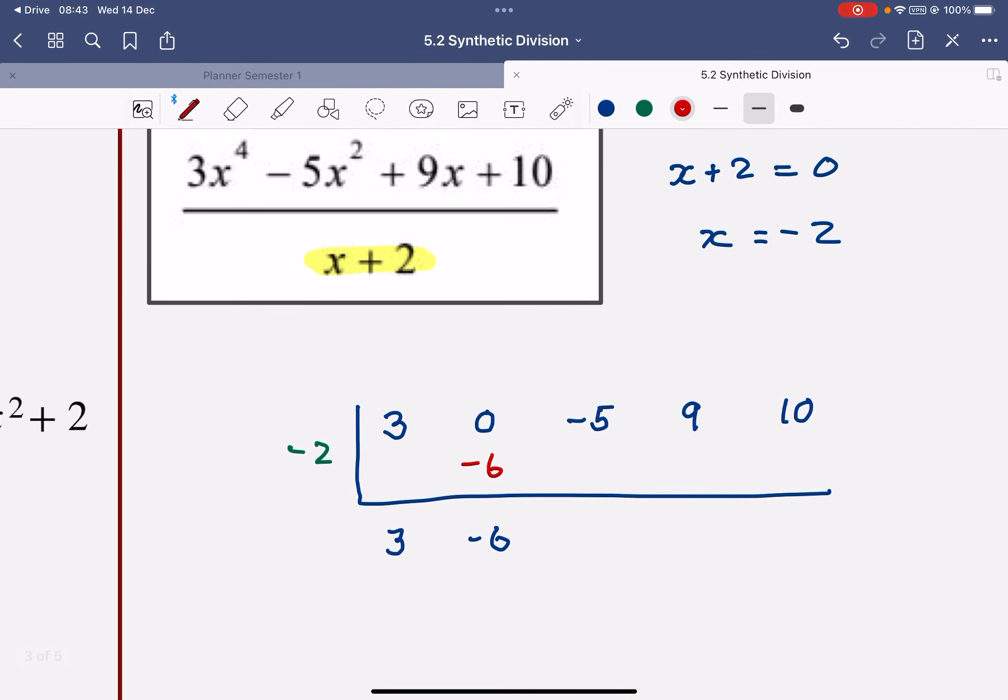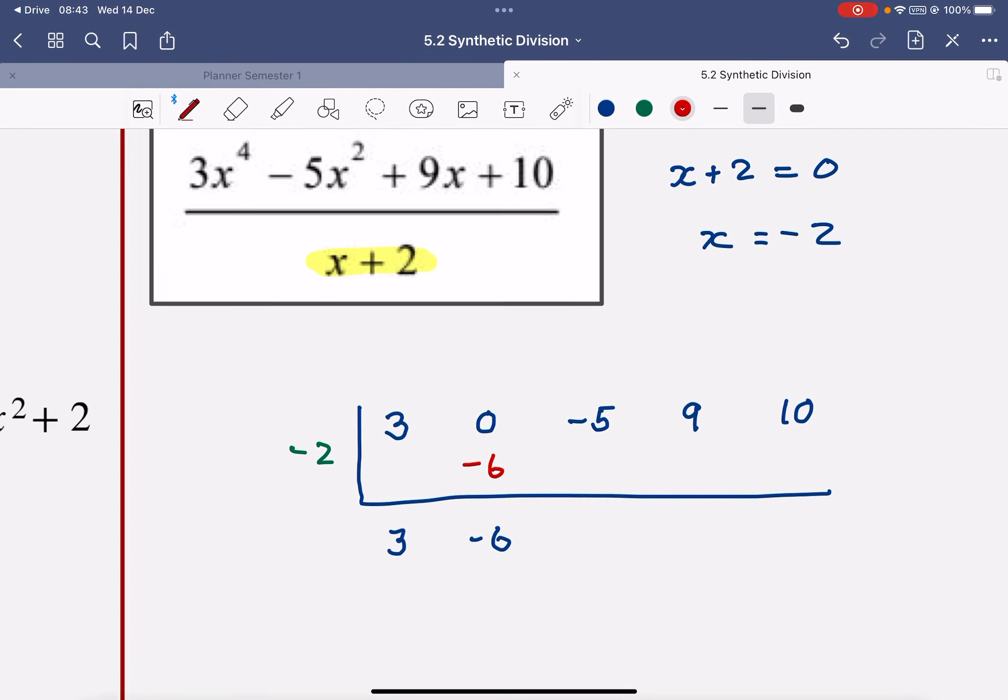I'm going to times that green number again, negative 2, by the negative 6 I've just dropped down, giving me 12. Add those numbers together, 7, and so on. So this now becomes negative 14. When we add those two numbers together, we get negative 5. Negative 2 times negative 5 is 10. I add those two numbers together and I get 20.